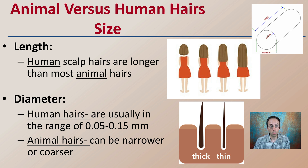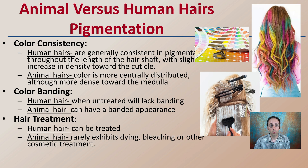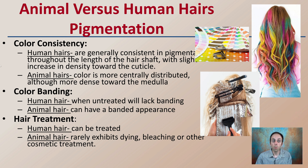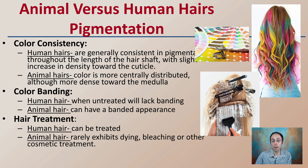A lot of this comes with just seeing many samples. Now looking at pigmentation: human hairs generally consist of pigment throughout the hair shaft with a slight increase in density towards the cuticle. For animal hairs, the color is more centrally distributed, more dense towards the medulla region. For color banding, when untreated, human hairs usually lack banding, while animal hairs will have a banded appearance. Human hair can also be treated with dyeing, bleaching, or other cosmetic treatments, which animal hairs really don't exhibit.